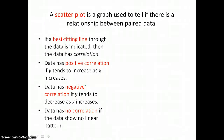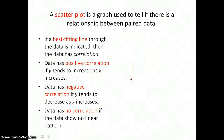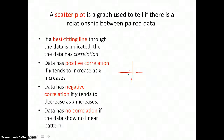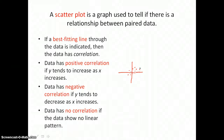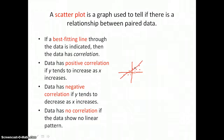Data has positive correlation if y tends to increase as x increases. So data with positive correlation might look like this on the coordinate plane, where all the data points seem to rise from left to right, and they are close to some best-fitting line through that data that also rises from left to right.